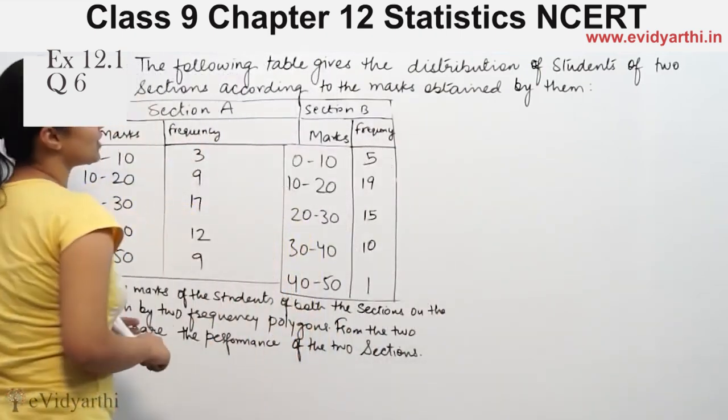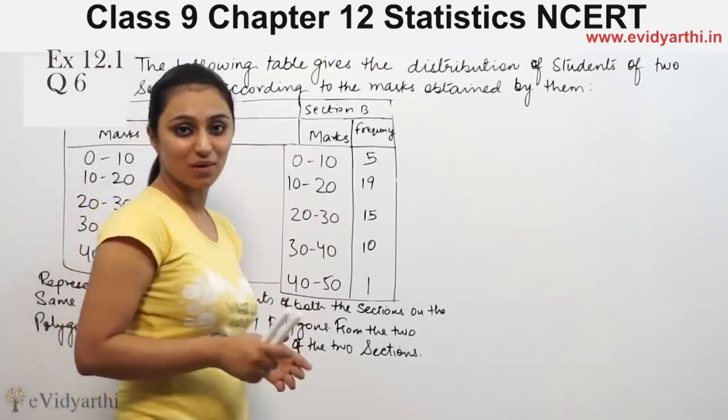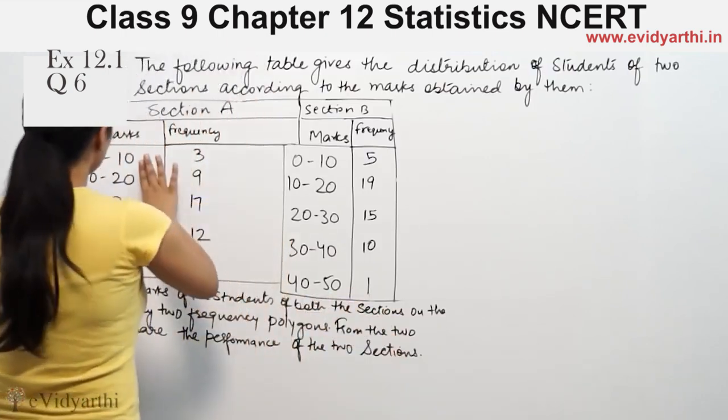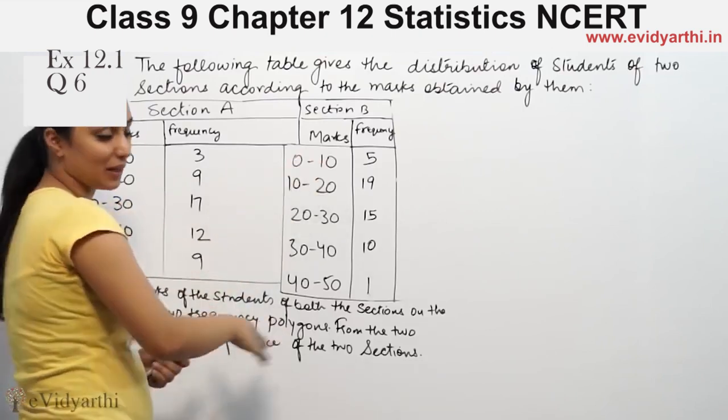The following example gives a distribution of students of two sections according to the marks obtained by them. The sections are 0 to 10, 10 to 20, 20 to 30, 30 to 40, and so on.